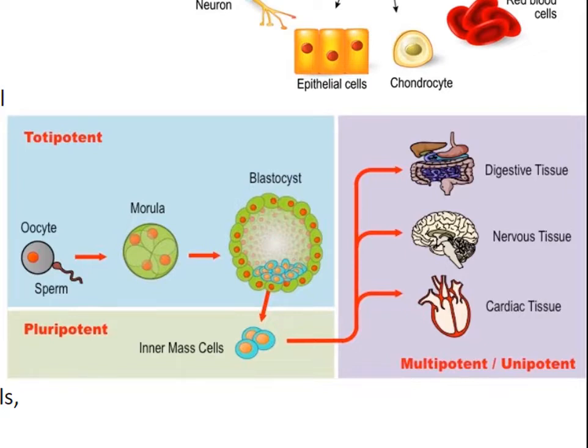The embryo consists of a blastocyst outer layer and an inner cell mass. The inner cell mass are called embryonic stem cells — they are capable of differentiating into any body cell, so they are called pluripotent. Both totipotent and pluripotent stem cells are the most prevalent in early embryonic development, because they have differentiated the least and more cell divisions are necessary in order to begin growing and specializing.